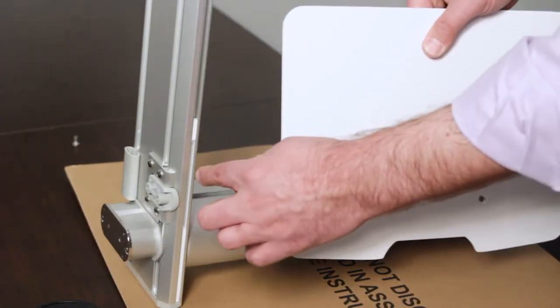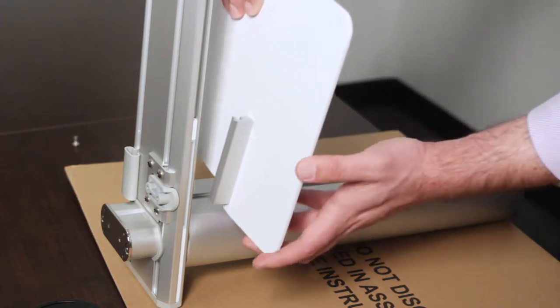Step 2. Insert the attached work surface track into the plastic guide on the column arm.